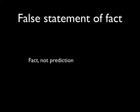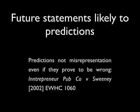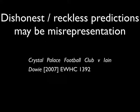Statements which are mere predictions, i.e. refer to the future, provided there is no dishonesty or recklessness involved, are not misrepresentations even if they are wrong. This comes from the case of Intrapreneur Pubco and Sweeney. However, where a party makes a statement in a reckless manner, or worse, in a fraudulent manner, knowing it will be false, such a statement could potentially be actionable as fraudulent misrepresentation, notwithstanding that it is a prediction or a future statement. See the case of Crystal Palace Football Club and Ian Dowie.